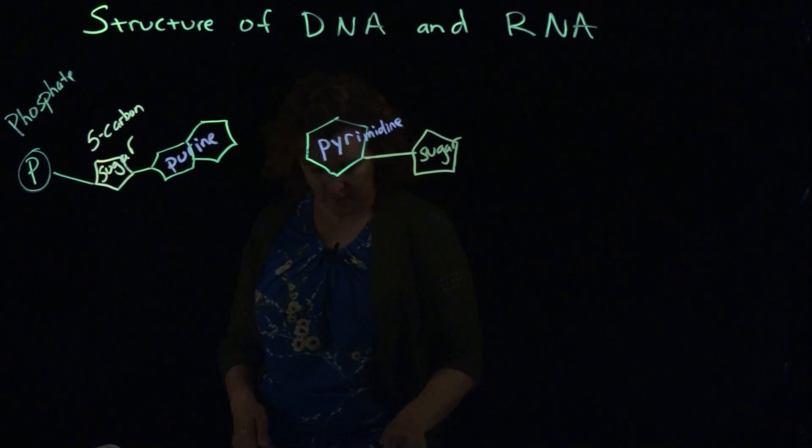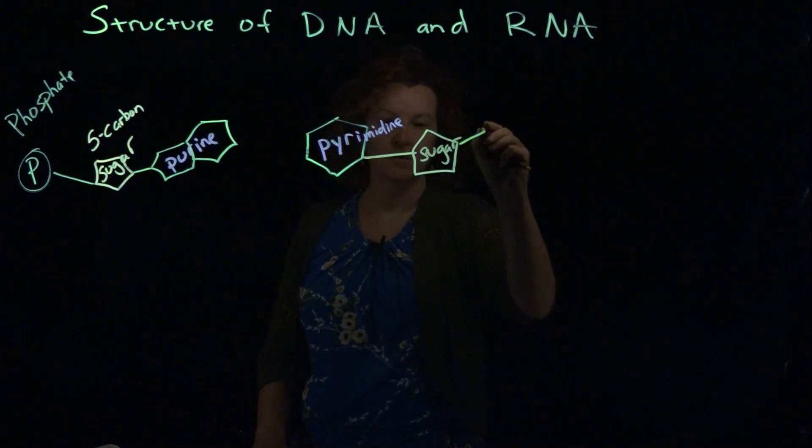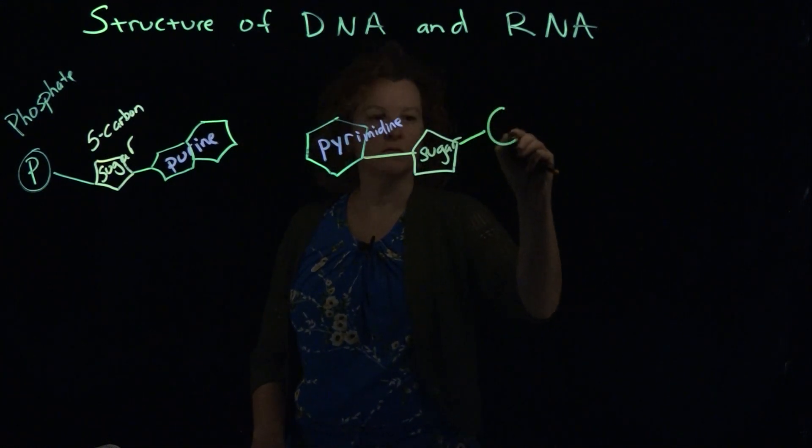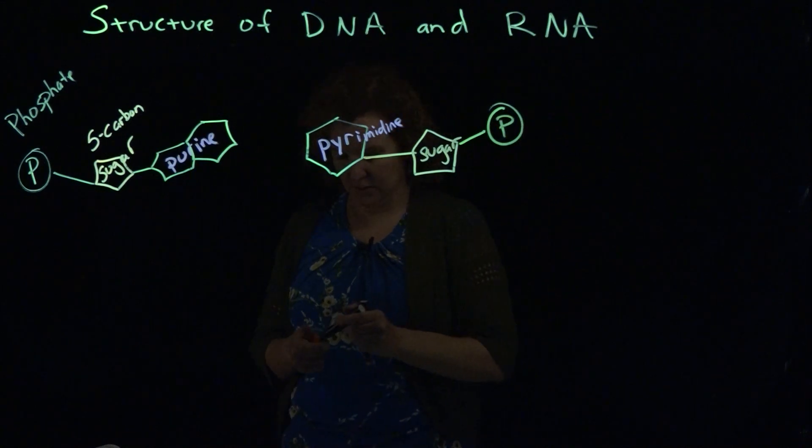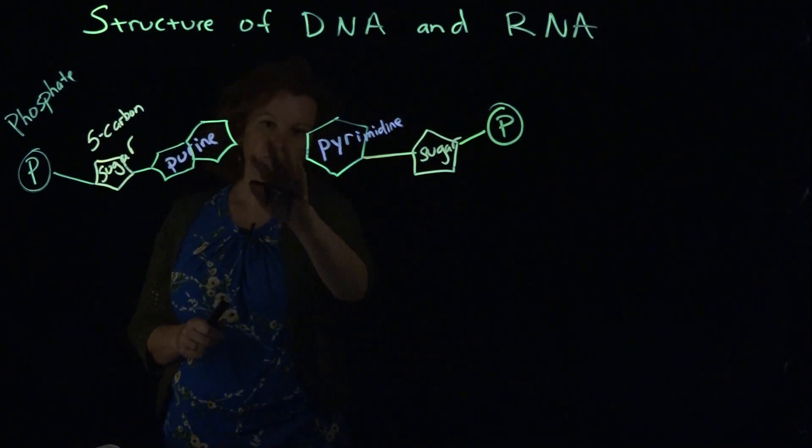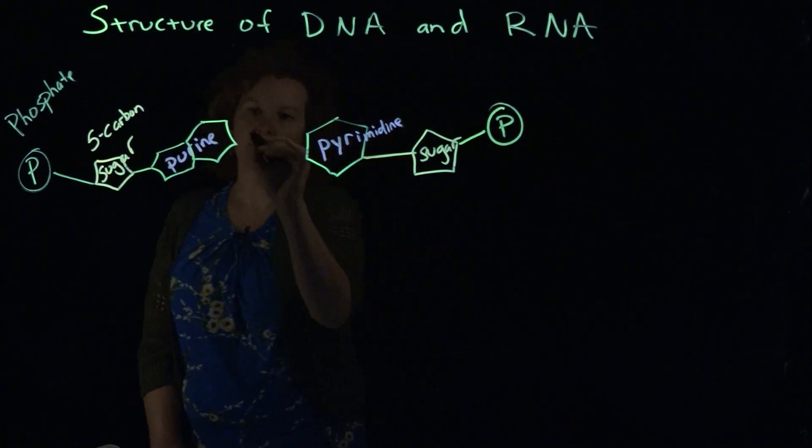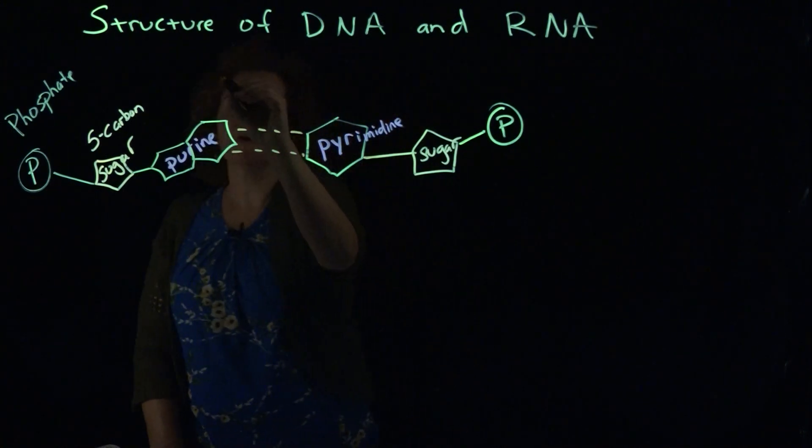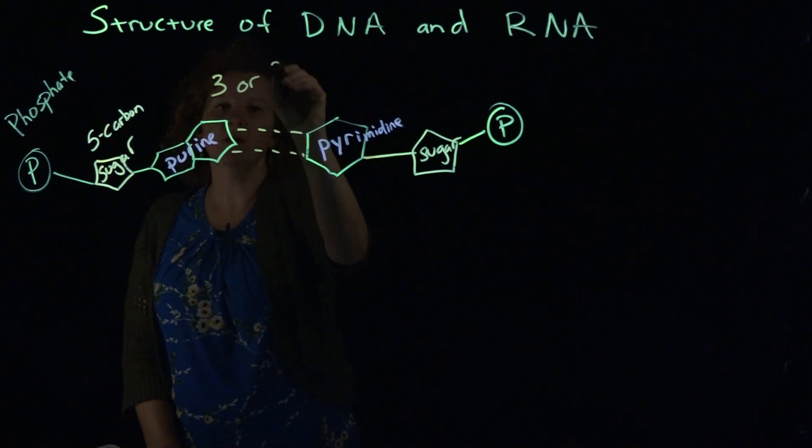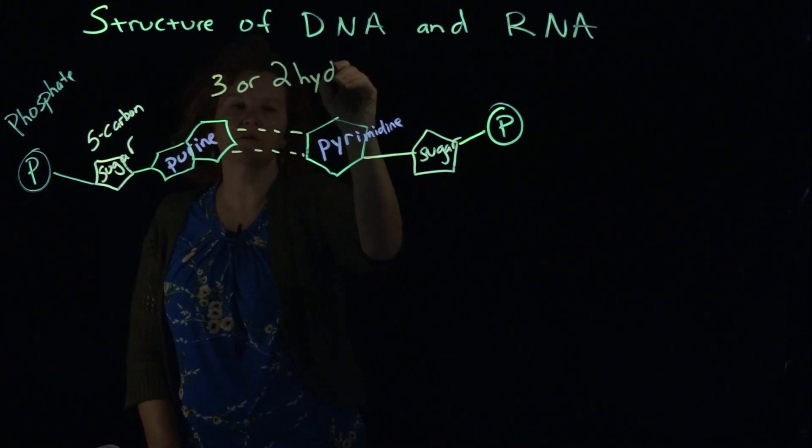And then you're going to have it bound to the phosphate group on the outside. They're bound in the middle by hydrogen bonds, so it depends on which purine and which pyrimidine. They either have three or two hydrogen bonds holding it together in the middle.